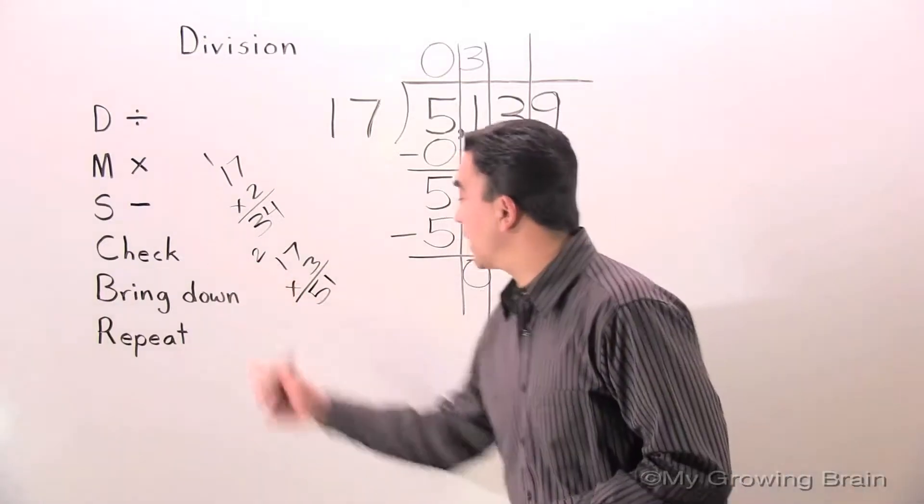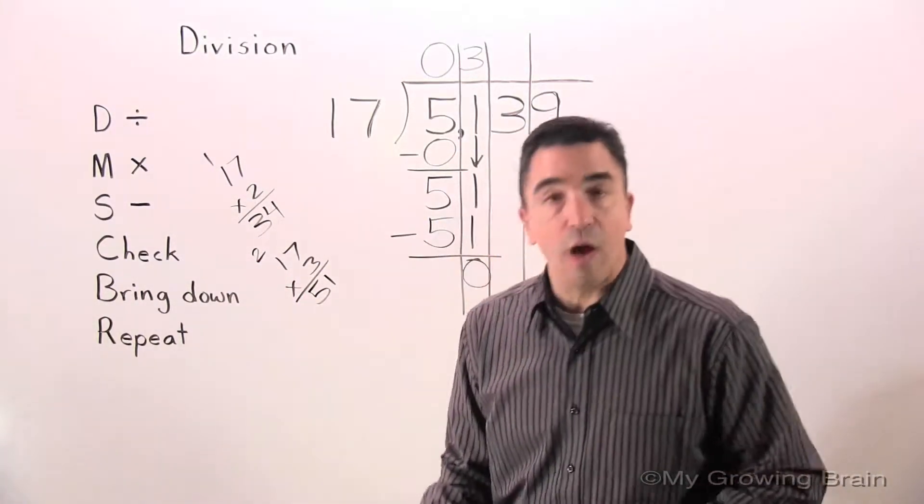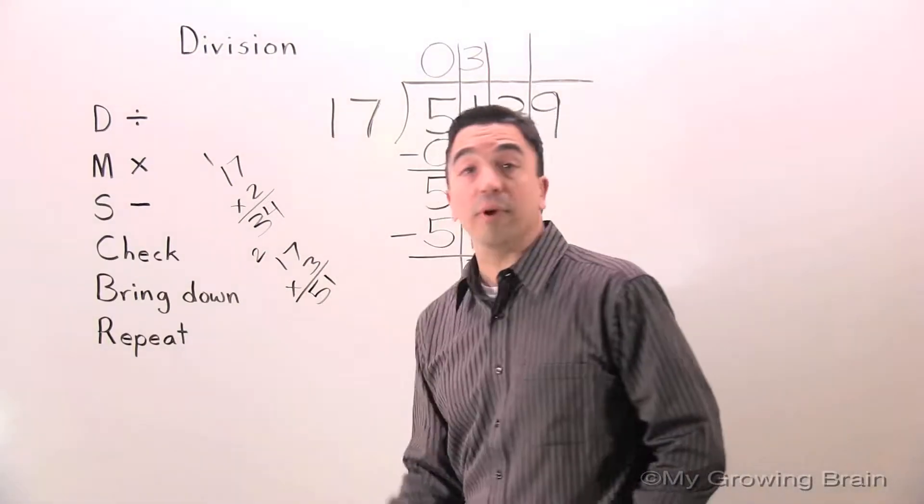Next step, check. 0 is less than 17. Keep on going. Next step, bring down.